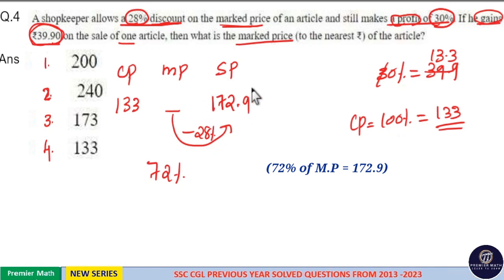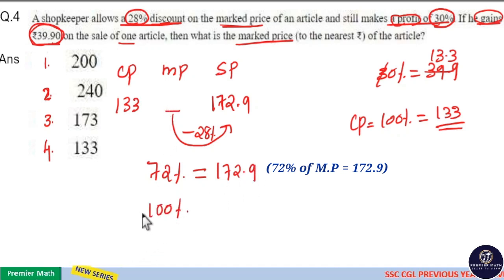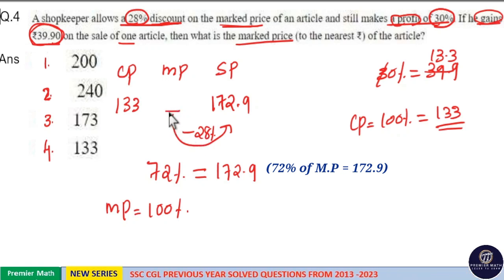So 72% is ₹172.90, then we need to find what is 100%. 100% means marked price because this discount is based on the marked price. This discount is made from the marked price, so 100% is marked price.